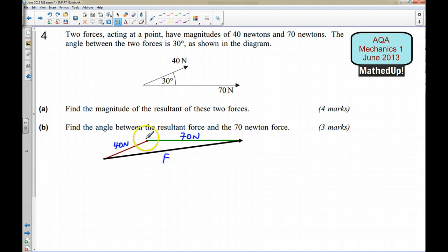And we also know this angle here. Well this here was 30 degrees, which means this angle here is going to be 30 degrees, which means this here is going to be 150 degrees, so I'm going to label that in as 150 degrees here.